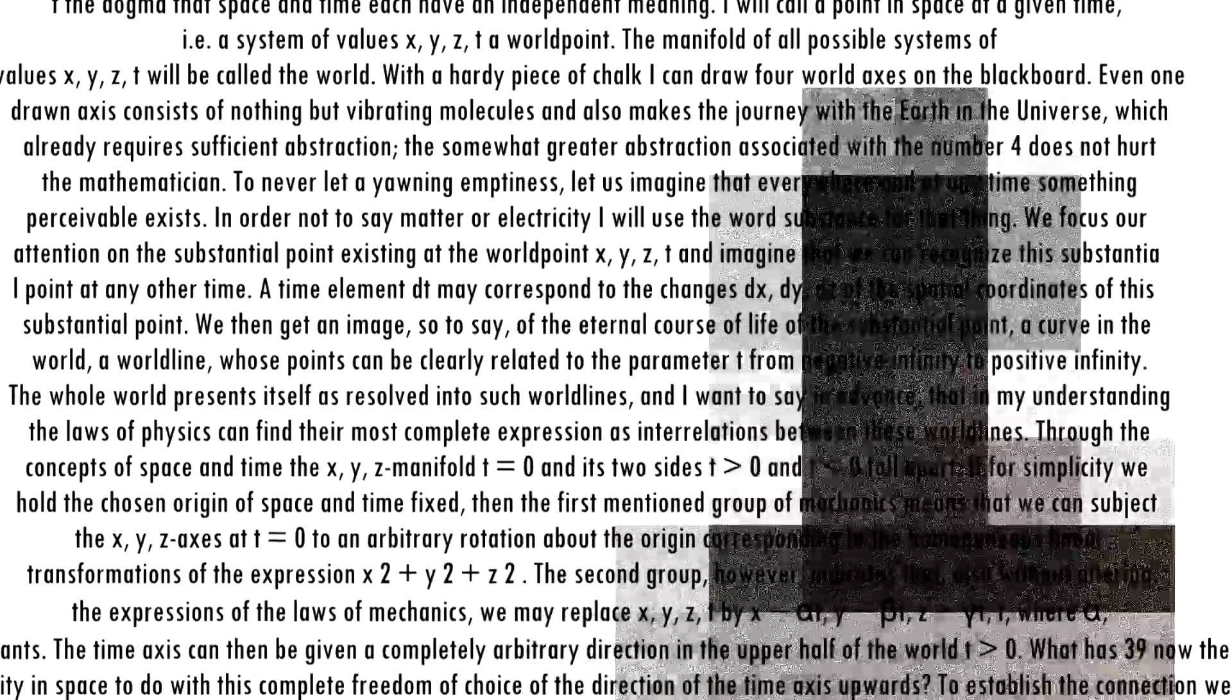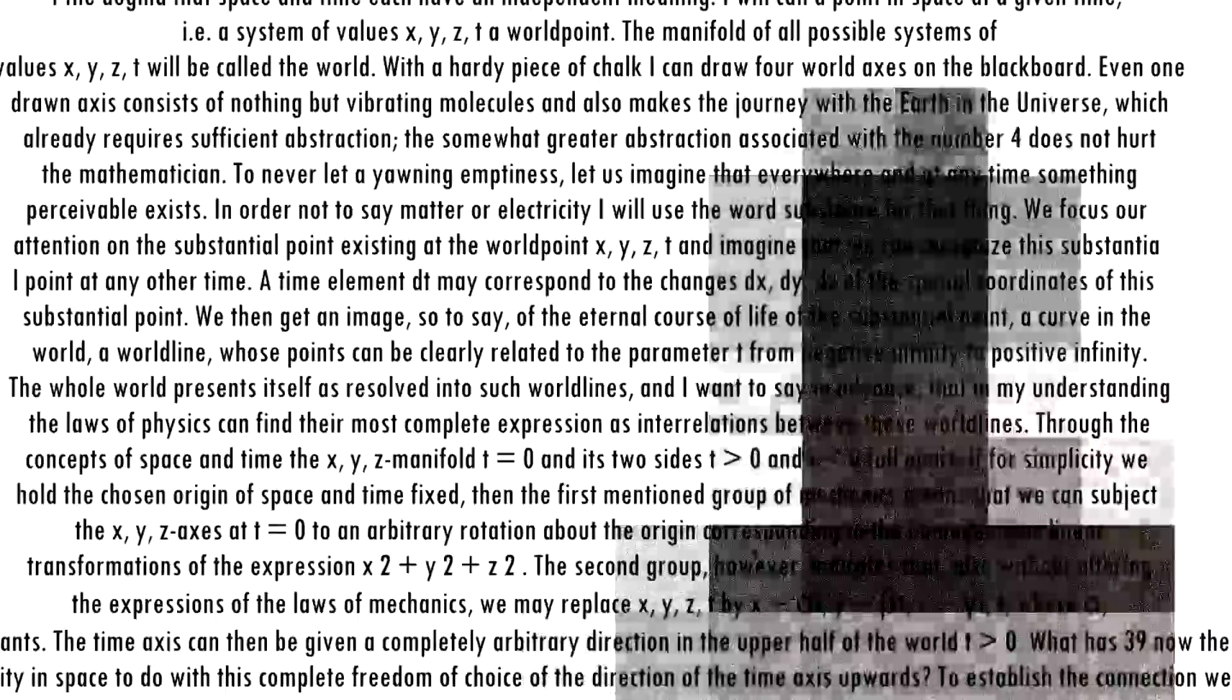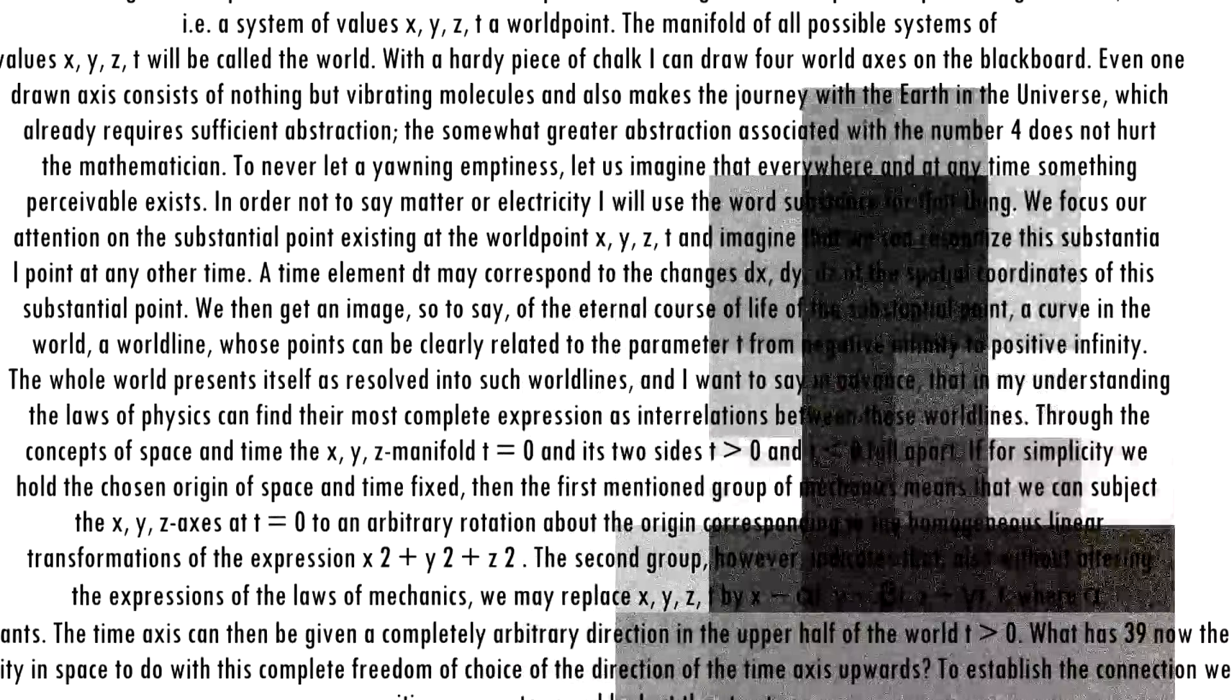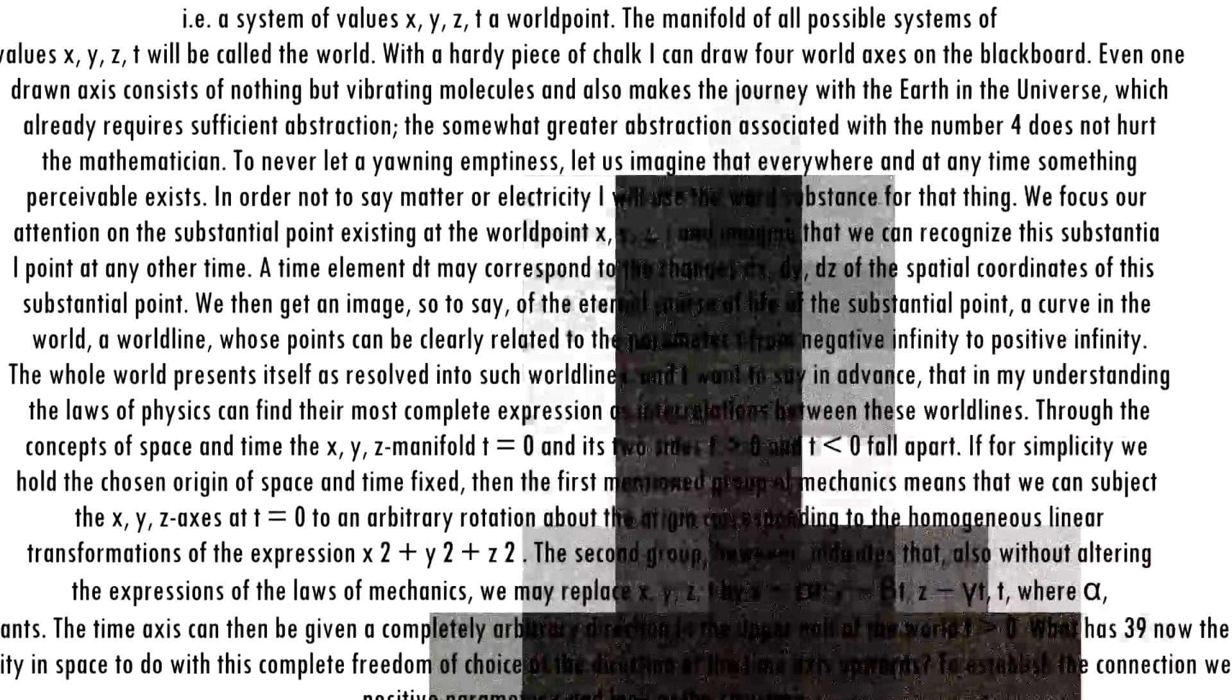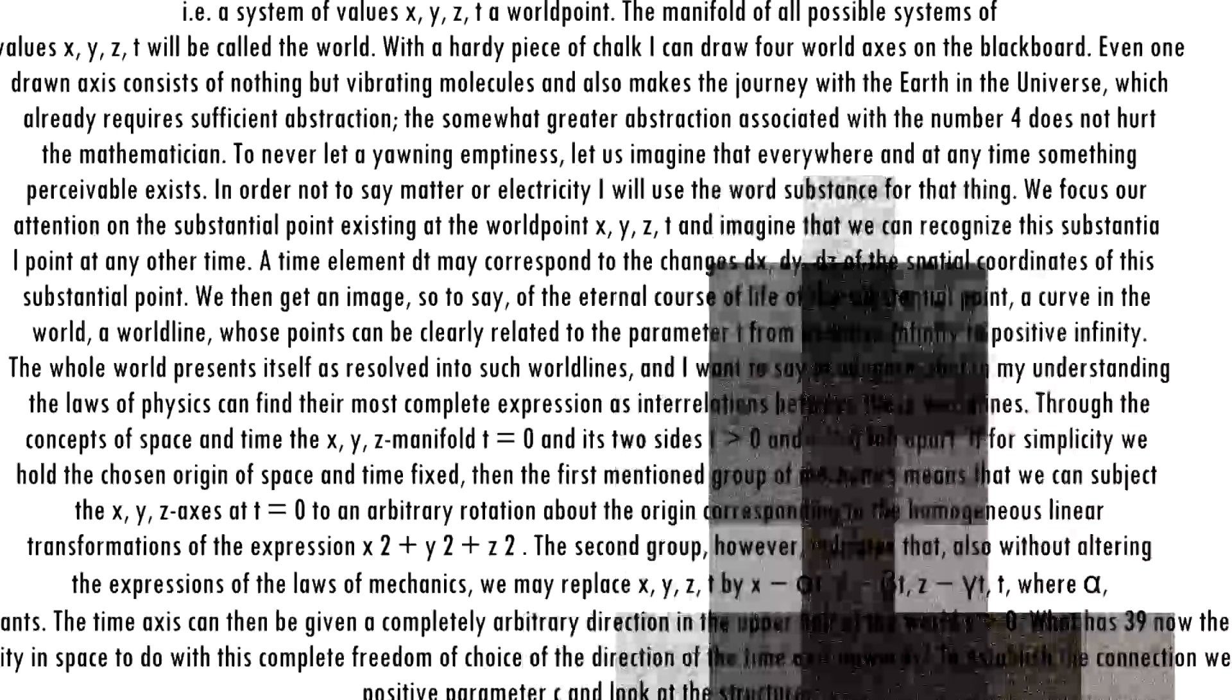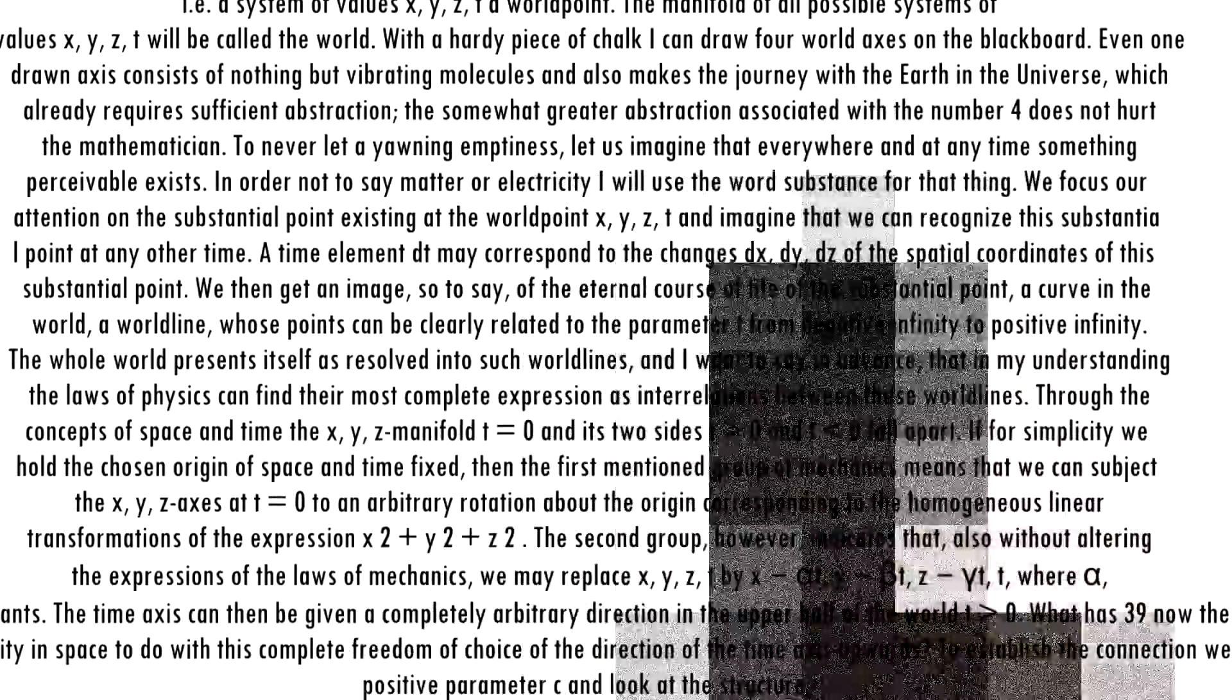The whole world presence itself has resolved into such world lines, and I want to say in advance that in my understanding the laws of physics can find their most complete expression as interrelations between these world lines. Through the concepts of space and time the x, y, z manifold t=0 and its two sides t>0 and t<0 fall apart. If for simplicity we hold the chosen origin of space and time fixed, then the first mentioned group of mechanics means that we can subject the x, y, z axes at t=0 to an arbitrary rotation about the origin corresponding to the homogeneous linear transformations of the expression x²+y²+z². The second group, however, indicates that,